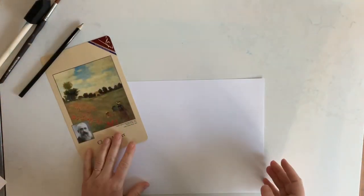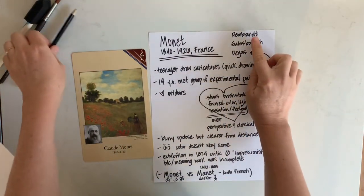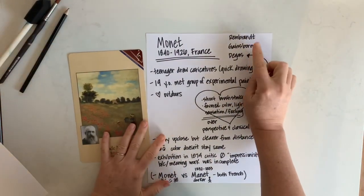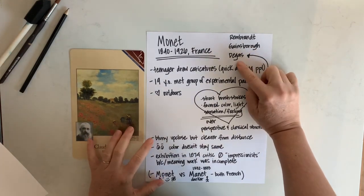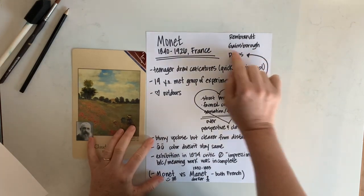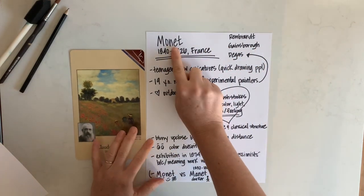We're going to talk a little bit about Claude Monet and then get started. We've talked about Rembrandt, Gainsborough, and Degas, and now we're heading over to Mr. Monet.